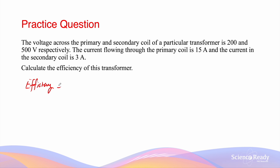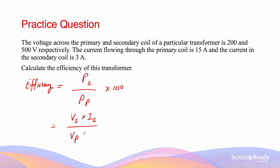Recall that efficiency is given by the power in the secondary coil, P_S, divided by the power in the primary coil, multiplied by 100. The power of the secondary coil is further given by voltage times current — V_S and I_S respectively — divided by the power in the primary coil, which will be V_P multiplied by I_P, the primary voltage and the primary current, all times 100.